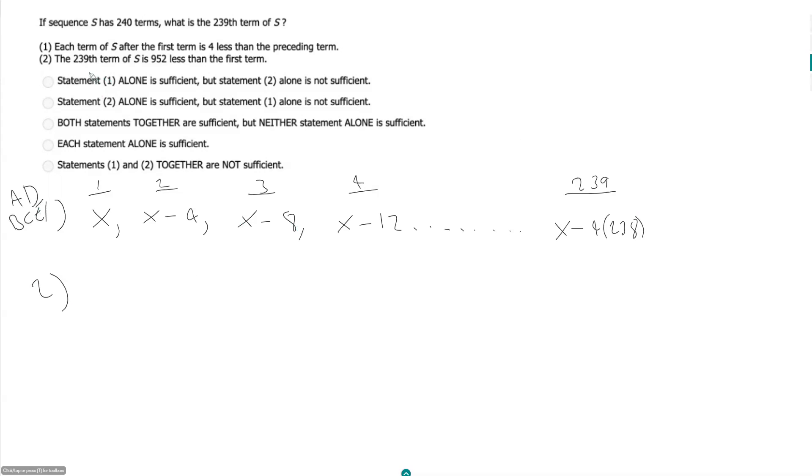See if we can get the first value, we get X from the second statement. The 239th term of S is 952 less than the first term. And so this isn't helpful, because what is 238 times 4?